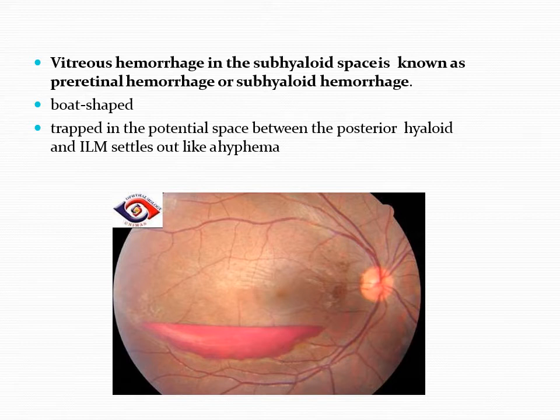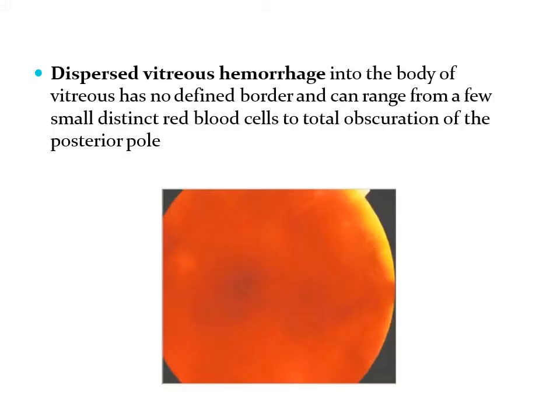Vitreous hemorrhage in the sub-hyaloid space is known as pre-retinal hemorrhage or sub-hyaloid hemorrhage. It is given a different name because of its typical presentation in the form of a boat shape. This boat shape occurs because the blood is trapped in a potential space between the posterior hyaloid and the internal limiting membrane and settles down due to gravity. Through this hemorrhage, you cannot see any retinal vessels because it is present in front of the retina, masking all structures beneath it.